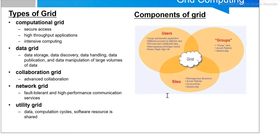Grid computing is the previous step of cloud computing. After it, many types of computing evolved — utility computing, cluster computing, and then cloud computing. These will be discussed in the later lectures. Thank you.